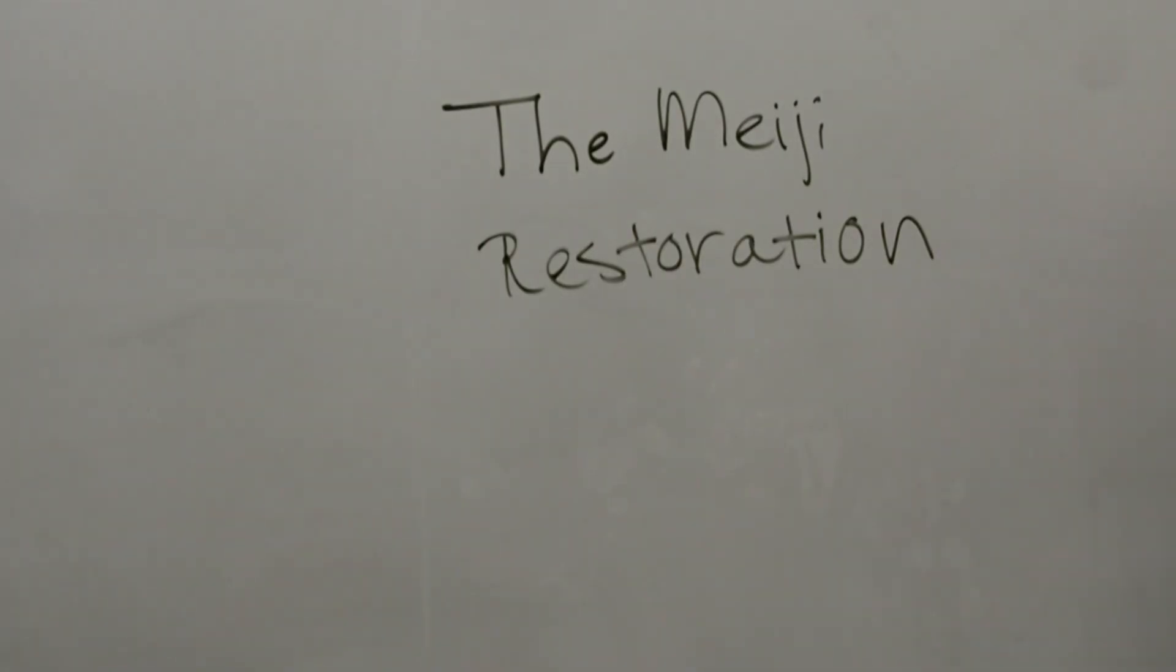In 1850, Japan was a feudal society run by a military government, an emperor, and sword-wielding samurai. Within 20 years, the country was totally transformed into a new kind of modern industrializing society. Here is the story behind it.